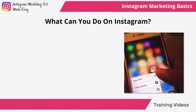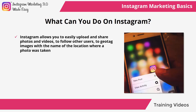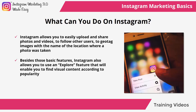What can you do on Instagram? Instagram allows you to easily upload and share photos and videos, to follow other users, to geotag images with the name of the location where a photo is taken, to connect your Instagram with other social networking accounts, and to use hashtags to make your content easier to find. Instagram also features an explore function that lets you find visual content according to popularity, location, and your own search criteria.